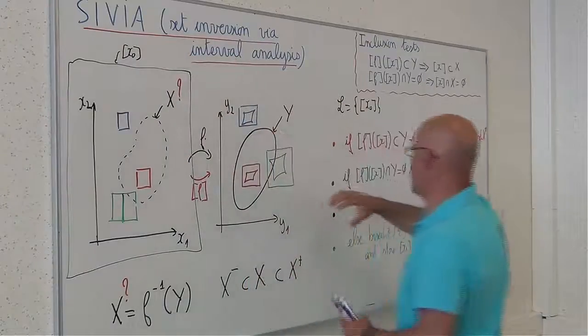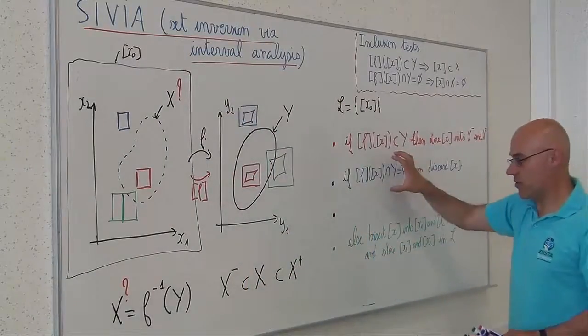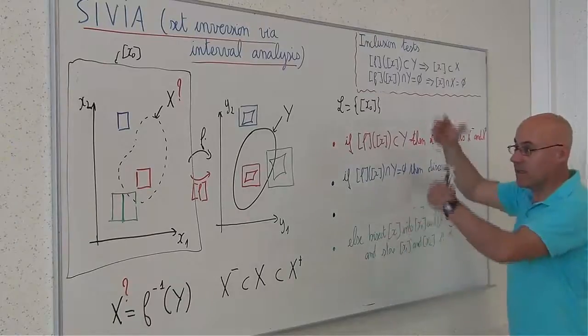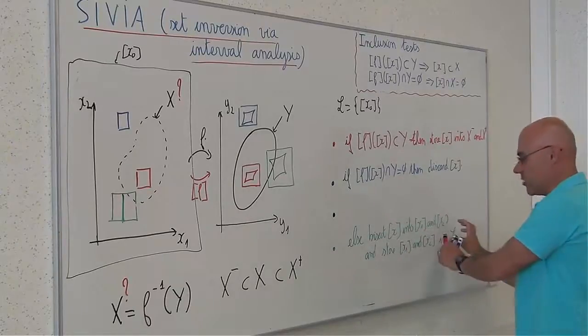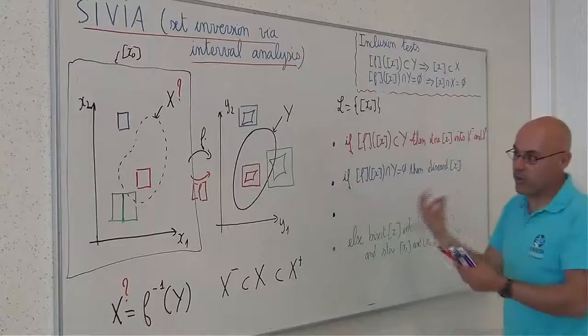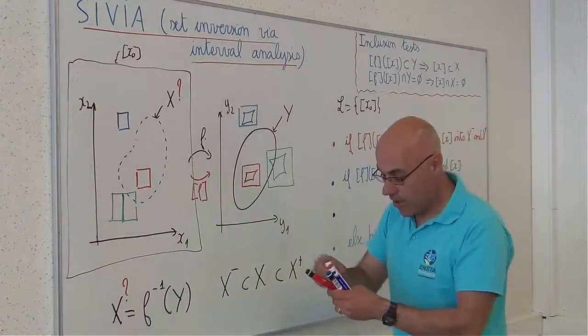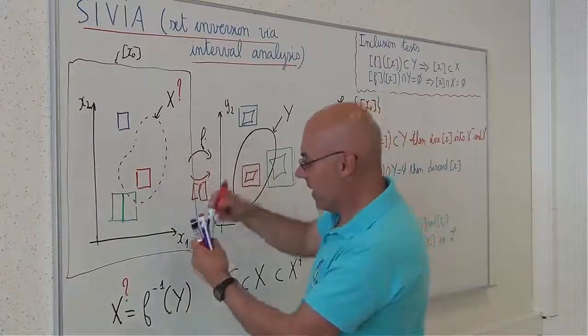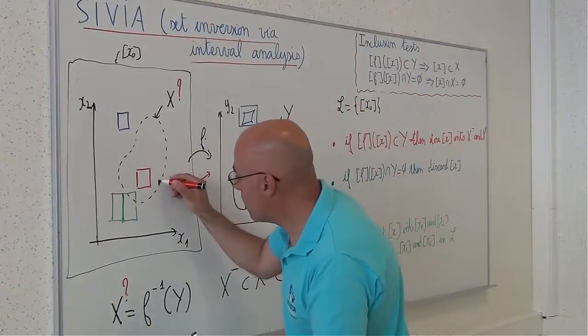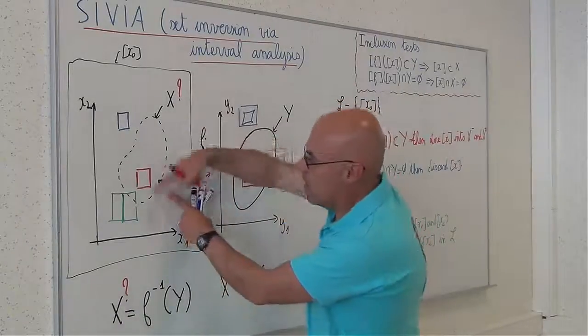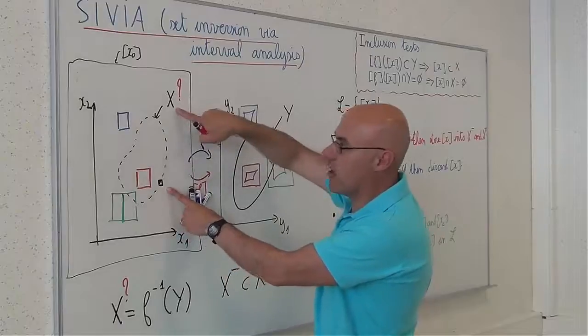This huge box will not satisfy this condition, neither this condition. It will be bisected. And after I will generate two boxes, it will be bisected x1. And I will quickly obtain a situation where I will have small boxes that are on the frontier of x.